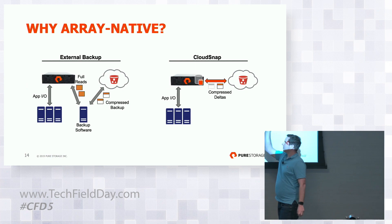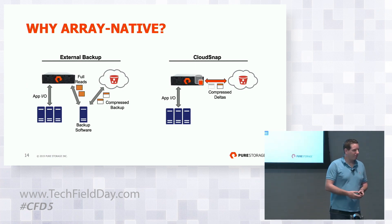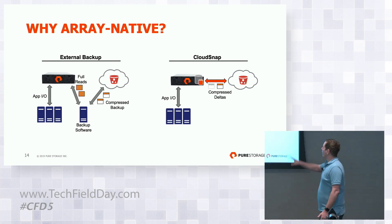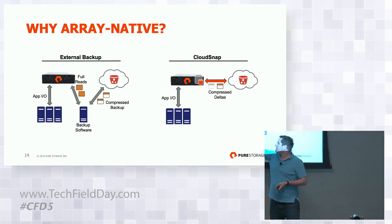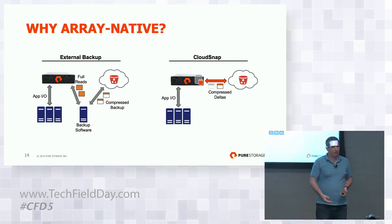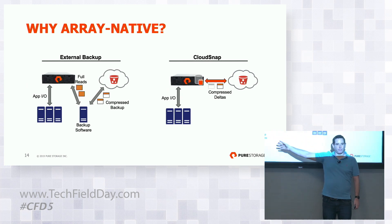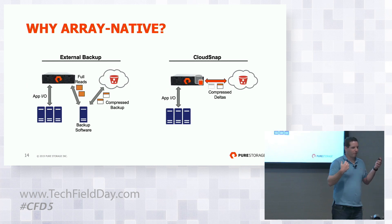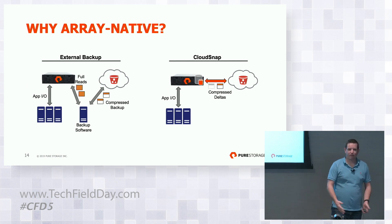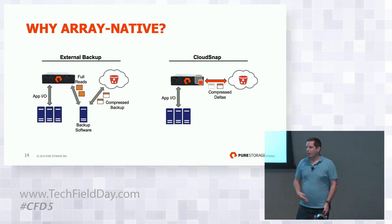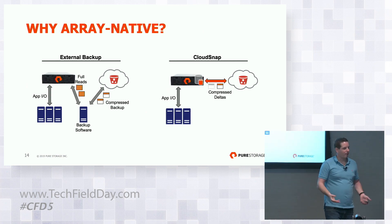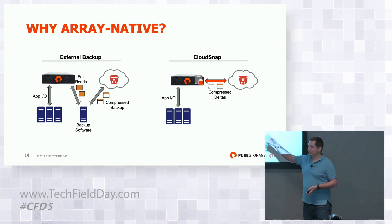Here we have a traditional prototypical backup setup on the left side, and CloudSnap on the right. On the traditional backup side, we have our Flash Array, the hosts doing application I/O where customer databases run, and then extra backup hardware and extra backup software. When a backup job runs, it may take a snapshot, read all the data from the Flash Array, perform a comparison and diffing again on the backup hardware itself, and then move it to the backup target — an NFS server, tape, or the cloud — redoing compression before storing.